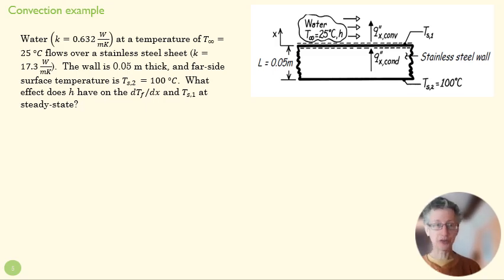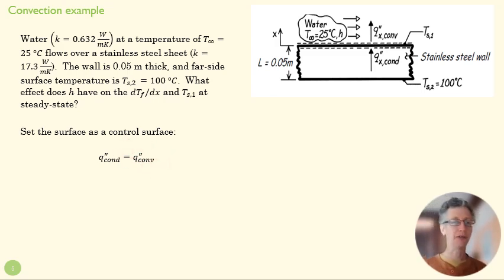We're going to start by setting our surface as a control surface, because if we create an infinitesimal control volume right here, that's not going to gain any energy or lose any energy. We can write that whatever goes into that surface by conduction through the solid is going to leave that surface by convection. So those two fluxes have to be equal to each other.